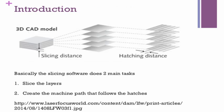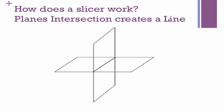The slicing software performs two main tasks: first, to slice the layers, and second, to create the hatchings and a machine path to follow those hatchings. An important foundational concept is that when two planes intersect each other, a line is created, and this line can be mathematically defined.